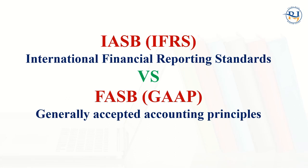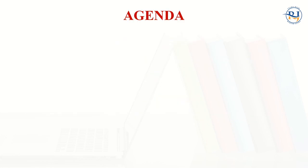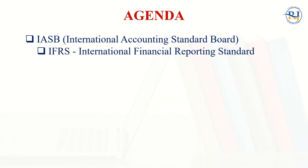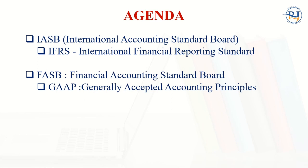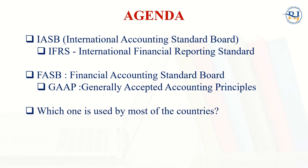In this video, I am going to explain the major differences between the IFRS and GAAP. IFRS is International Financial Reporting Standards and GAAP means Generally Accepted Accounting Principles. I will cover these two aspects with the meaning of their associated boards: IASB, meaning International Accounting Standard Board, and FASB, meaning Financial Accounting Standard Board, and which one is used by most countries. At the end, we'll see the main benefits and how they differ from each other.